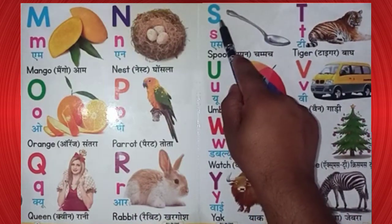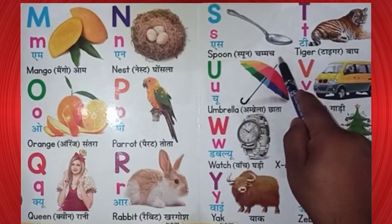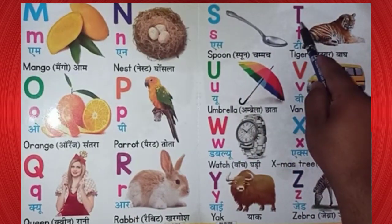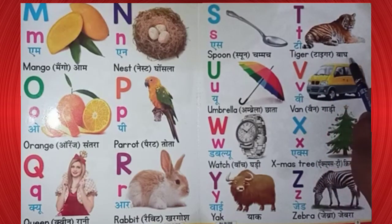S. S for spoon. Spoon means chammach. T. T for tiger. Tiger means baagh.